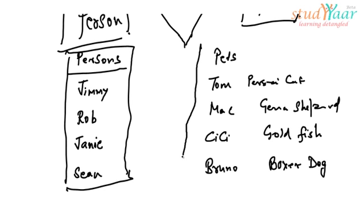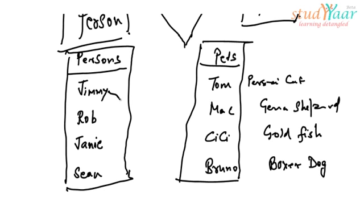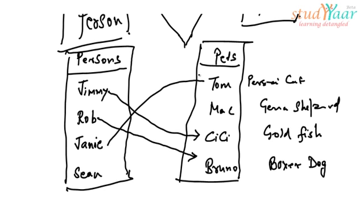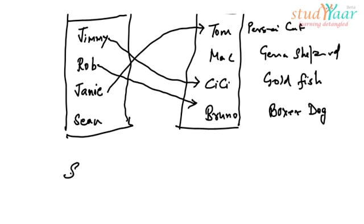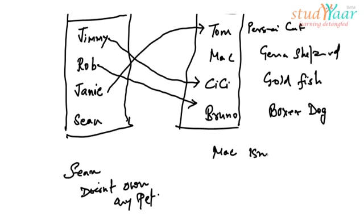These are the persons and these are the pets. Jimmy owns CC, Chaney owns Tom, and Rob owns Bruno. So we will have a relationship between Jimmy and CC, Chaney and Tom, and Rob and Bruno. Note that Sean doesn't own anything — he doesn't own any pet — and Mac is not owned by anyone.